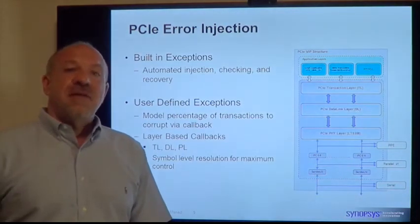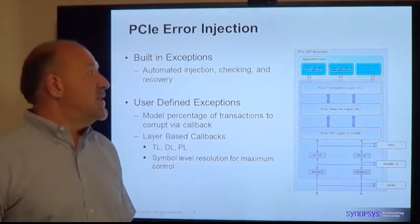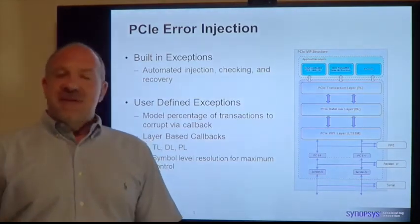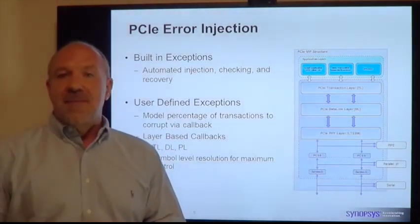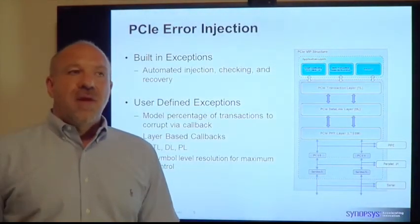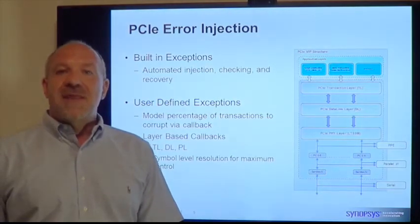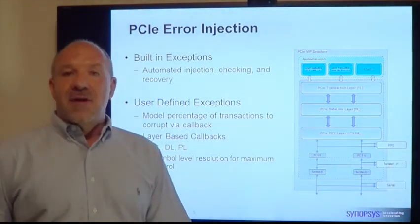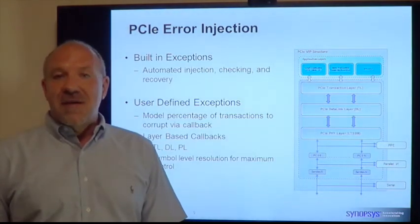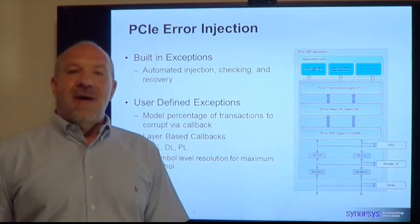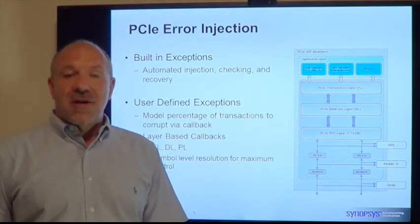The next thing I'd like to talk about is error injection. The error injections we support range from those that are completely automated and built in. We have a list of injections we support and you can tell us which one you want to run. We'll do that error injection, make sure it happens, and then check it. For example, if you wanted to do an LCRC error, you would tell us to inject that error. We'd go ahead and do that, then make sure a NAK comes back from the other device. Once we get that NAK, we'll go ahead and replay and recover from the error injection. If the device on the other end actually sent an ACK back instead of a NAK, we would flag that as an error. This is all automated — just one or two lines of code — and you don't have to write complex callbacks to handle the error recovery.